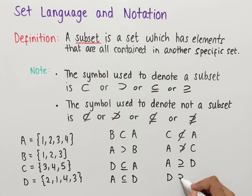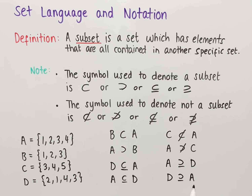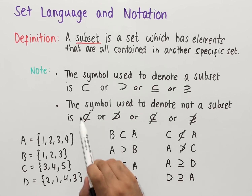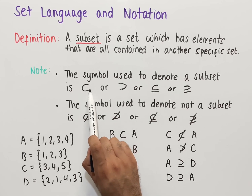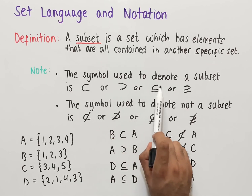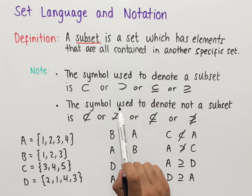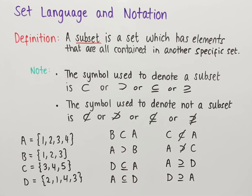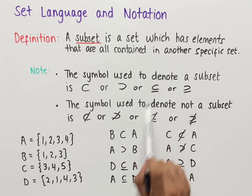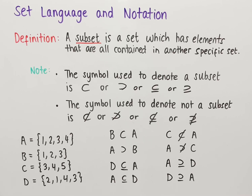The key distinction between the subset symbol without a line and the subset symbol with a line underneath is this: if the line is not present, we have a subset that is not equal; if the line is present, one set is a subset of the other and both sets are equal — as shown in this last example with sets D and A.